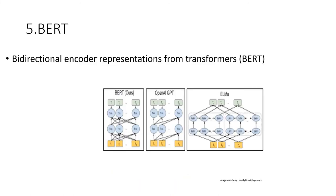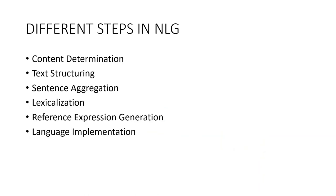The next model is BERT — Bidirectional Encoder Representations from Transformers — a transformer-based machine learning technique for NLP pre-training developed by Google. BERT was created and published in 2018 by Jacob Devlin and his colleagues from Google. As of 2019, Google has been leveraging BERT to better understand user searches.